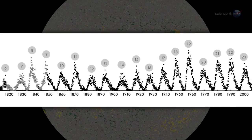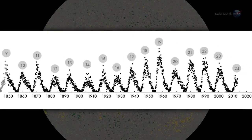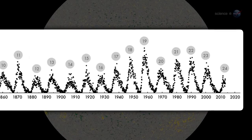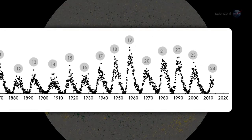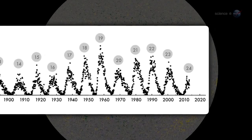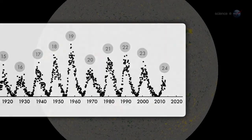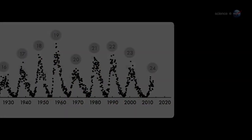The Sun's magnetic field changes polarity approximately every 11 years. It happens at the peak of each solar cycle, as the Sun's inner magnetic dynamo reorganizes itself. The coming reversal will mark the midpoint of solar cycle 24. Half of SolarMax will be behind us, with half yet to come.